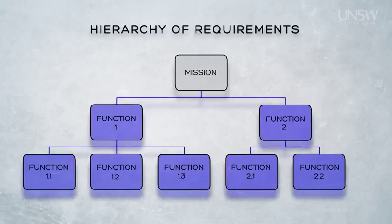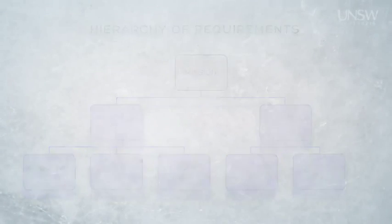First, let's look at the process by which needs and requirements are related to each other at the various levels of hierarchy. A functional hierarchy is produced through two principal processes: elicitation and elaboration.